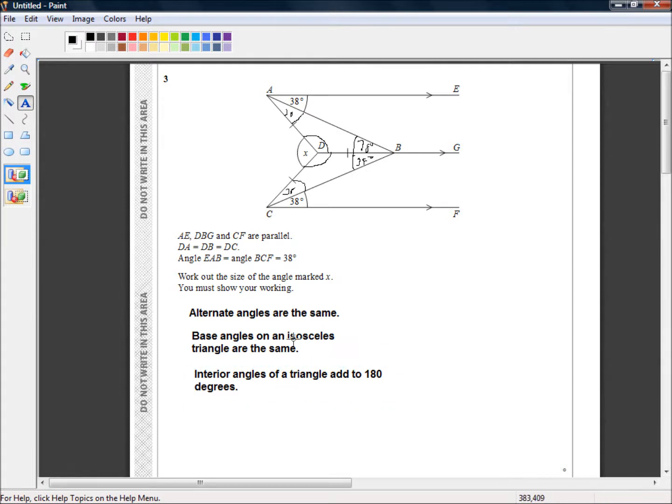Okay, so those are the three rules that we're using. So if we have this is 38 degrees and this is 38 degrees, then this angle here is 180 degrees minus 2 times 38. So again, we'll show our working. 180 minus 2 times 38